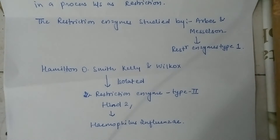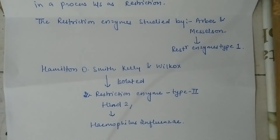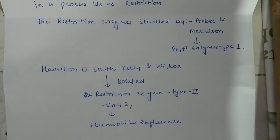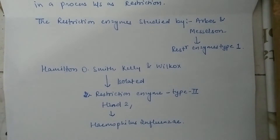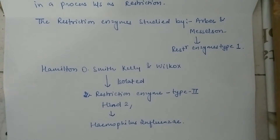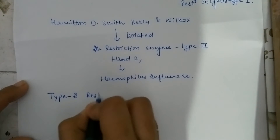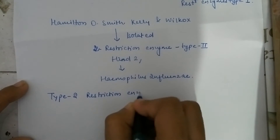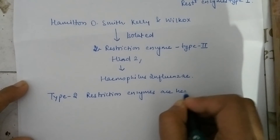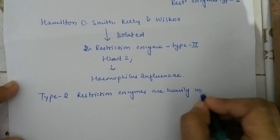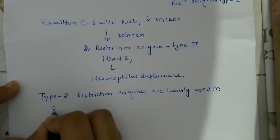Type 2 restriction enzymes are a class of restriction enzyme used in laboratories for routine DNA analysis and gene cloning. This is because Type 2 restriction enzymes cut DNA at defined positions close to or within their recognition sequences, and they are heavily used in recombinant DNA technology.